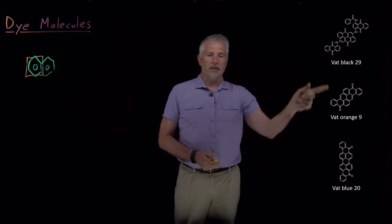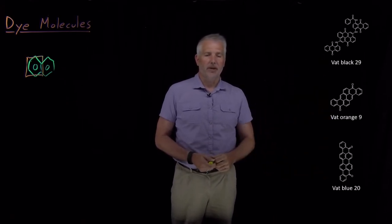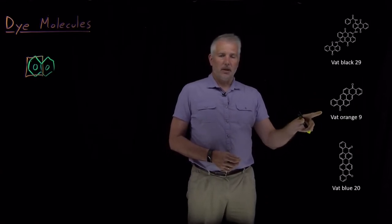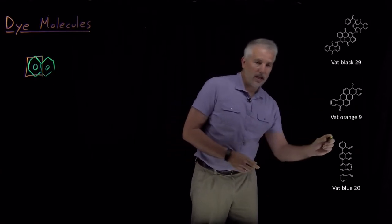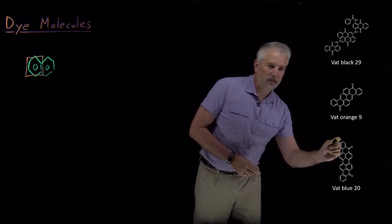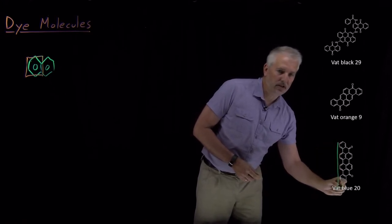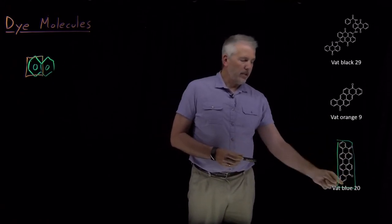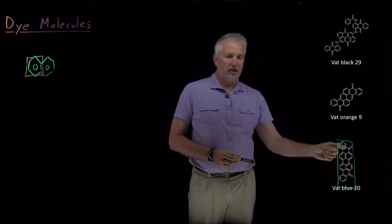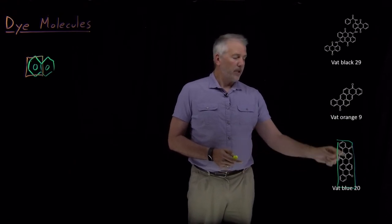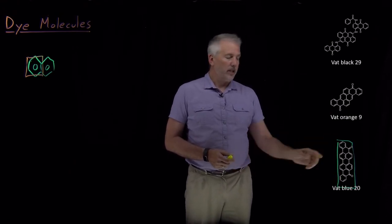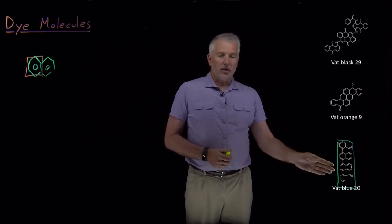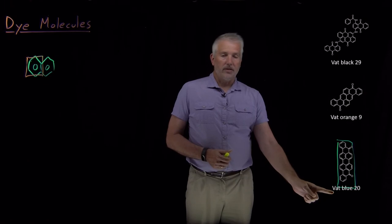You can see that each of these molecules behaves a lot like a two-dimensional particle in a box. I have a large conjugated section of the molecule. Within this portion there's pi conjugated electrons that can move freely, and the shape of this box determines the wavelengths of light that are absorbed and consequently the wavelengths that are not absorbed and why this molecule looks blue.